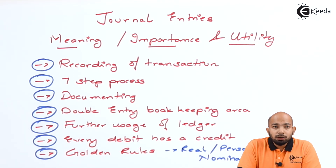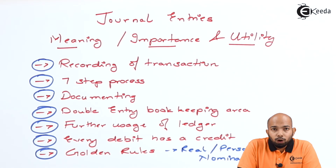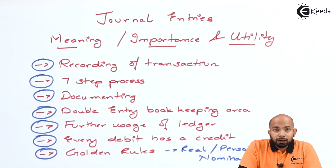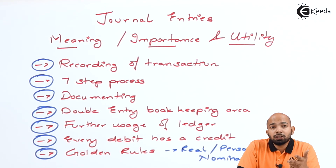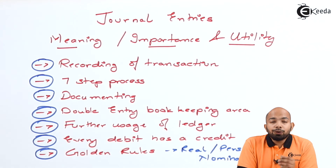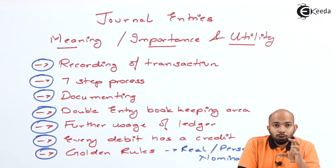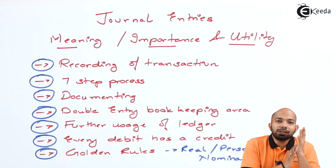We have discussed about golden rules. We have real account, personal account, and nominal account — these are the three golden kinds of accounts in accounting. When we talk about the real account, the rule is: debit what comes in, credit what goes out. To follow this golden rule, you need to categorize the accounts as per the journal entries, and once categorized, you can pass journal entries according to the real account rule.